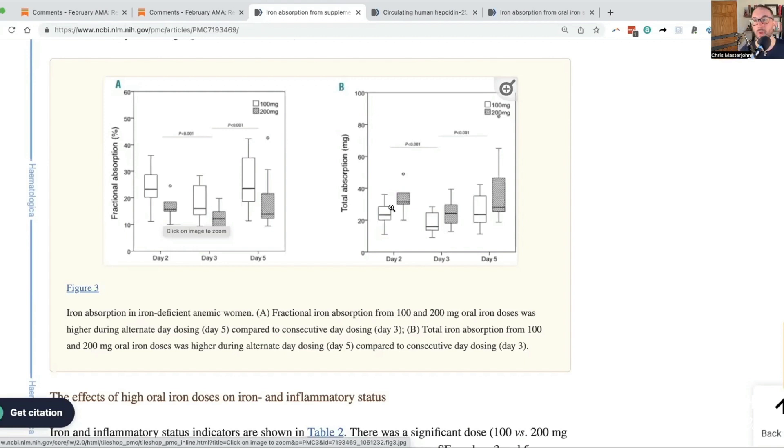Now, I think the rest of this is kind of BS. I mean, it's real, but it's nowhere near as relevant as this group wants to make it sound like it is. So what they're showing you is that fractional absorption tanks down on day three, and it goes back up. With the 100 milligrams, it goes all the way back up, maybe a little higher. The 200 milligrams, it kind of partially recovers on day five. Why? Because you waited an extra day.